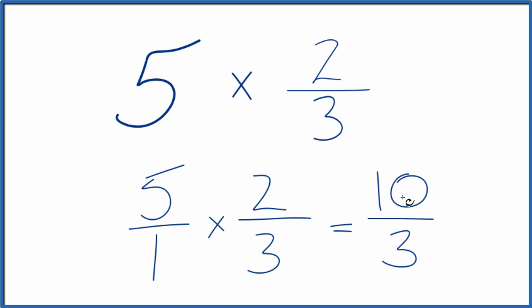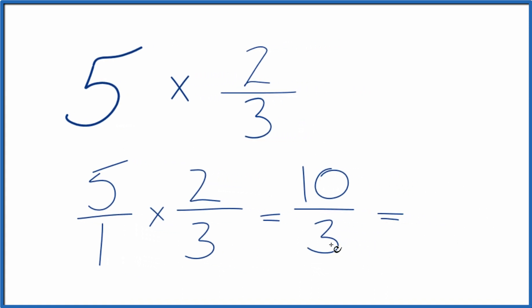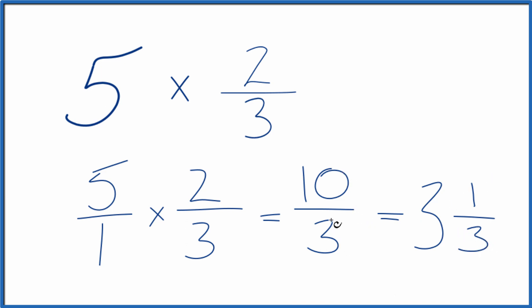This is an improper fraction — 10 is larger than 3 — so we could change it to a mixed number. 3 goes into 10: 3 times 3 is 9 with 1 left over. So we get 3 and 1 third, which is the same value as 10 over 3. So in answer to our question, 5 times 2 thirds is 10 thirds, or if you want a mixed number, 3 and 1 third.